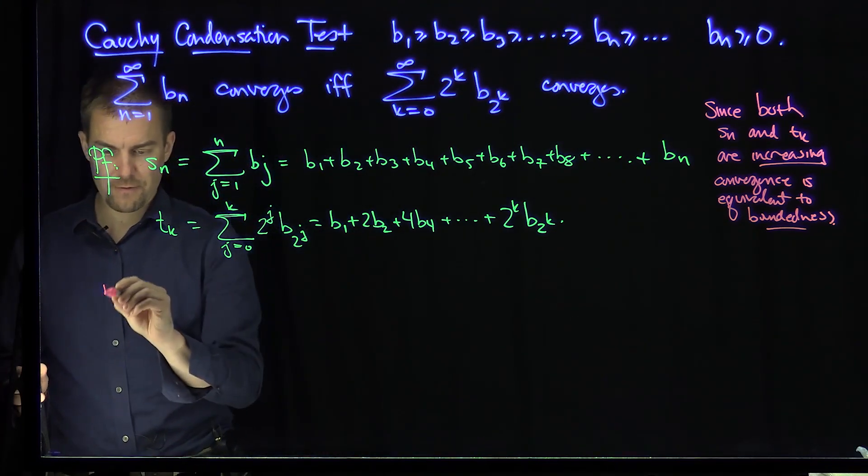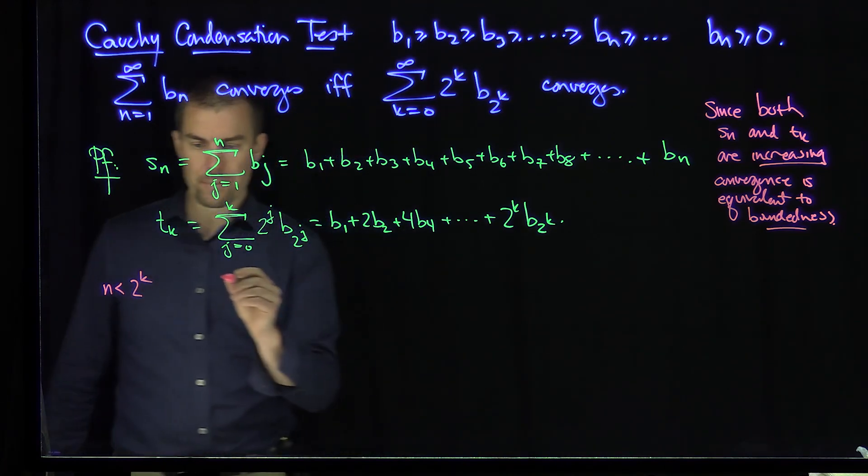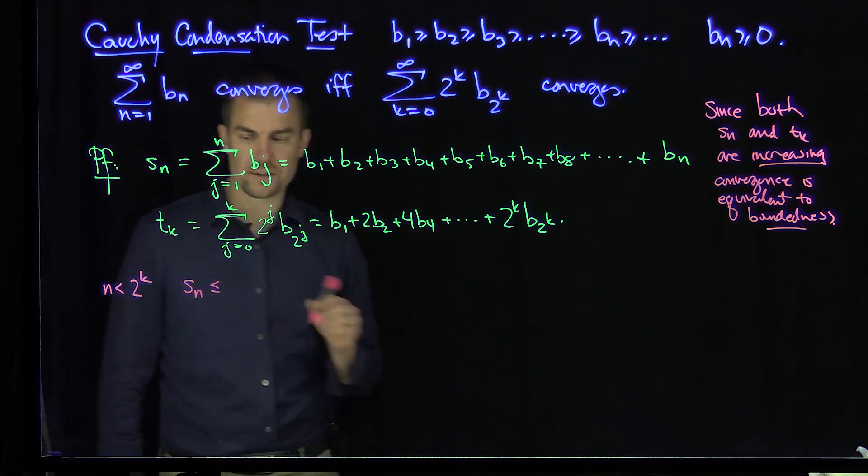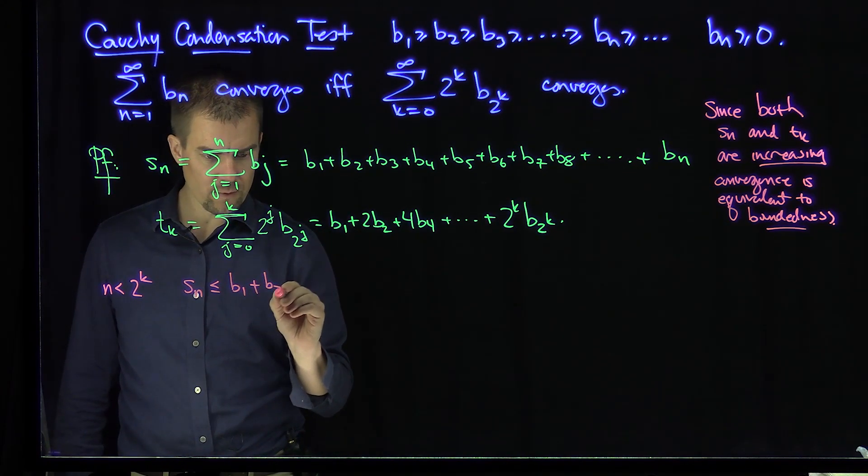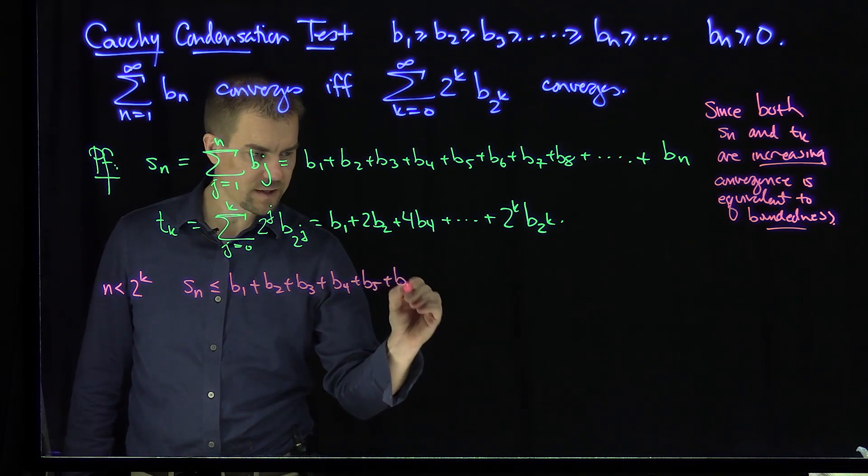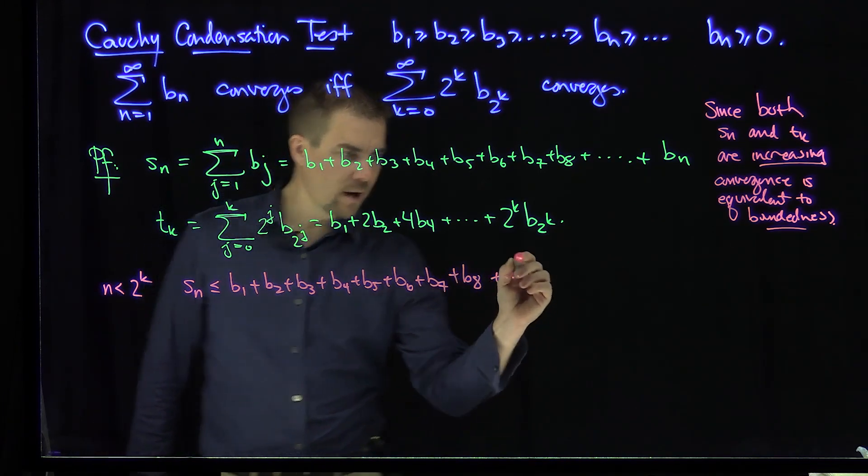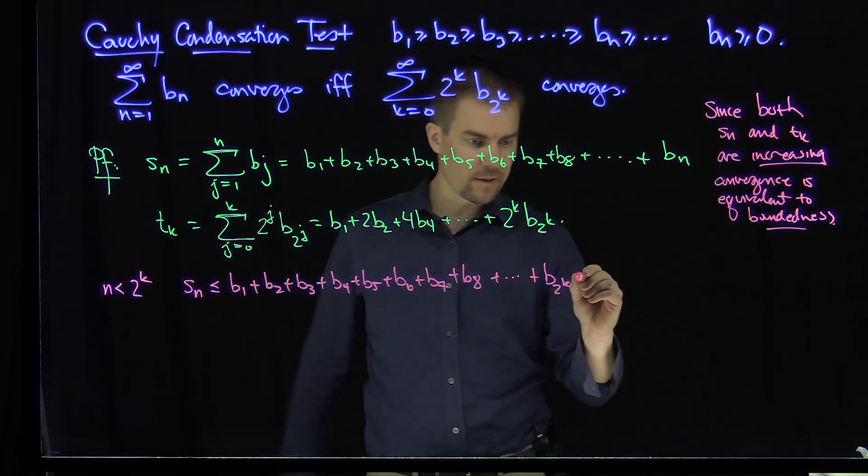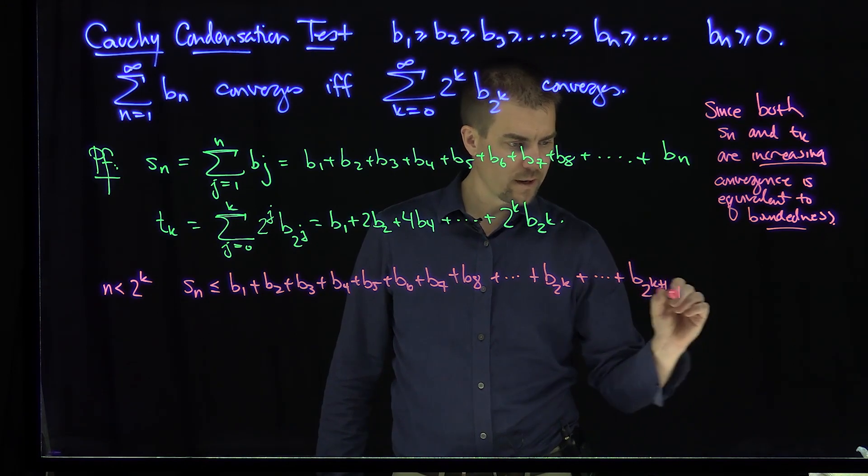The first case we'll consider is if n is less than 2 to the power of k. Then I'm going to make Sn a little bit bigger. I'm going to estimate n from above by saying it's less than or equal to B1 plus B2 plus B3 plus B4 plus B5 plus B6 plus B7 plus B8, all the way down, and then plus B to the 2k, because I know n's less than that, all the way down to B to the 2k plus 1 minus 1.